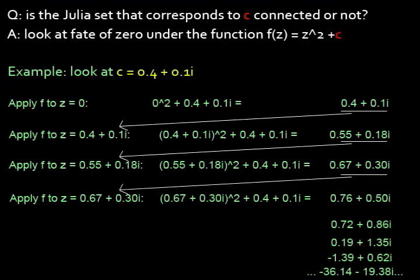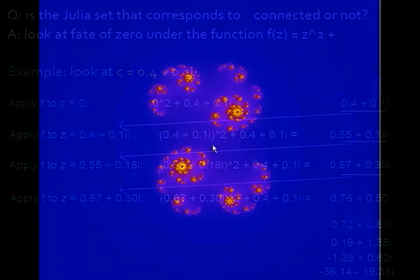Now, in this particular case, it looks like 0 will escape. So I will make the educated guess that if you were to look at all the other points and generate the entire Julia set, it will be disconnected. And I would be right.